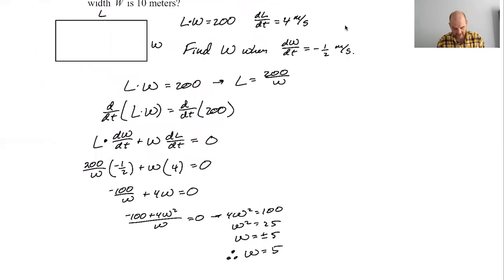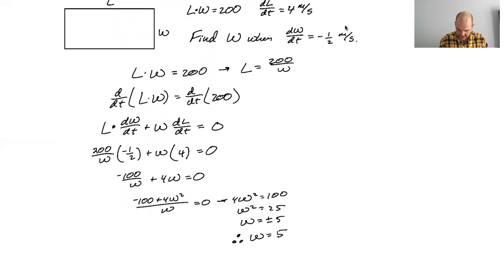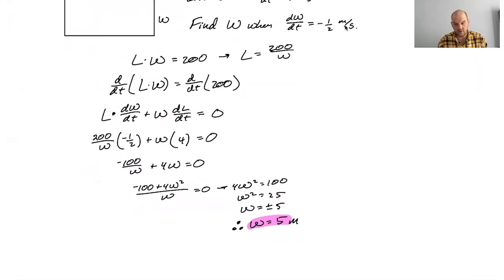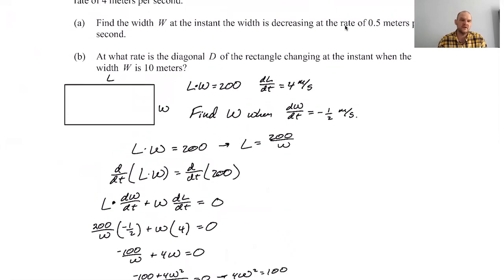but therefore W equals five in the context of this problem. Cause I do not believe that we can have a negative side. So this is the answer. That's my final answer. I guess meters, my final answer, but keep in mind, all of the work is your answer. So it's not like you're just boxing that and saying like five. No, you got to show all that work. So I think that's right.